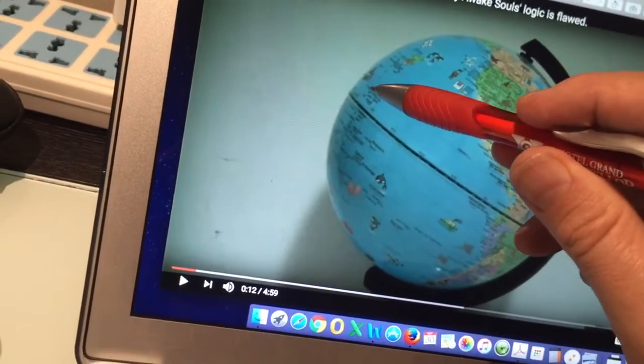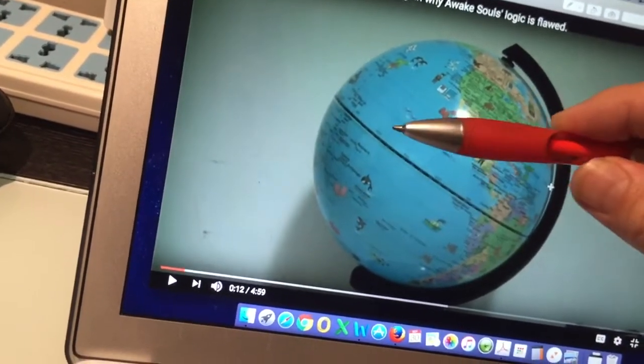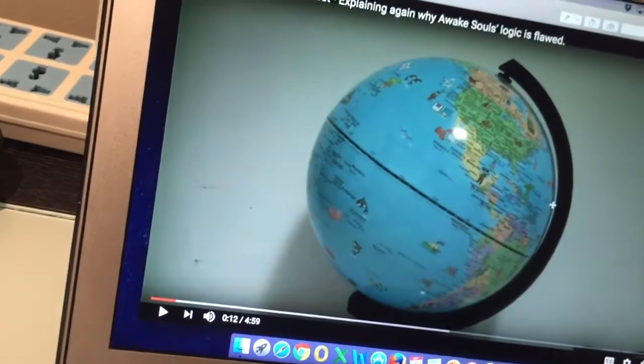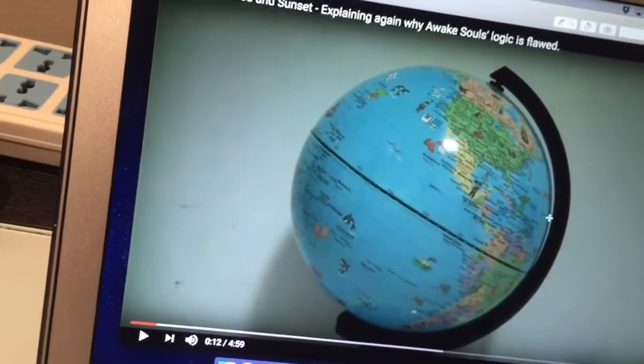And where those latitude lines are completely flat, they're going up, they go level, then they go down. Where they are completely level is exactly on the Terminator. And this is why the Sun rises at 090 and sets at 270 all over the Earth.